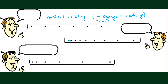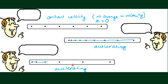When the distance between dots becomes bigger and bigger, this is saying that the object is accelerating. Comparing two ticker tapes, one object is accelerating more than the other — you can tell because the spacing between dots is bigger, meaning greater acceleration.